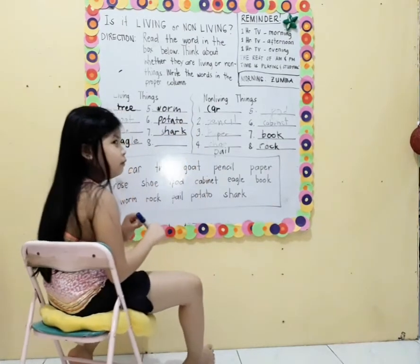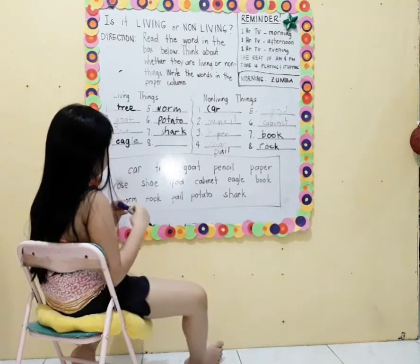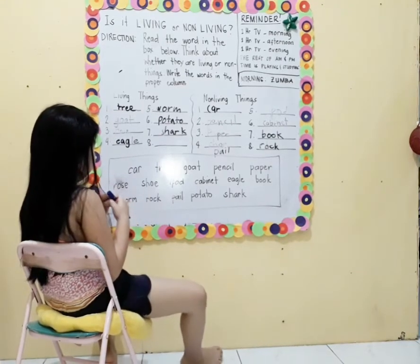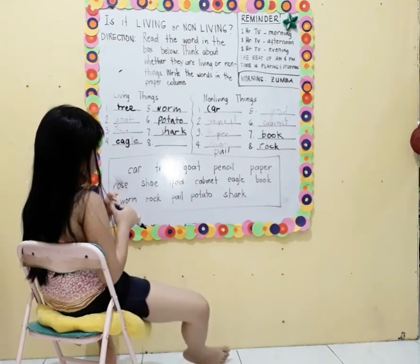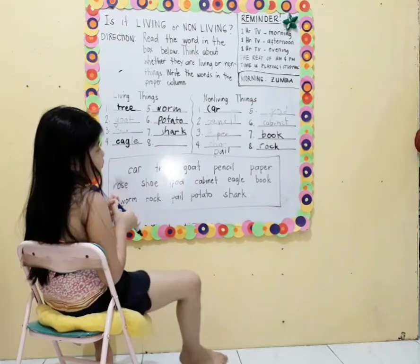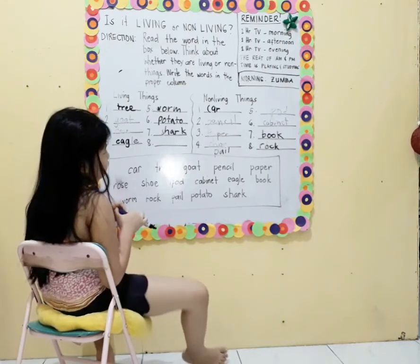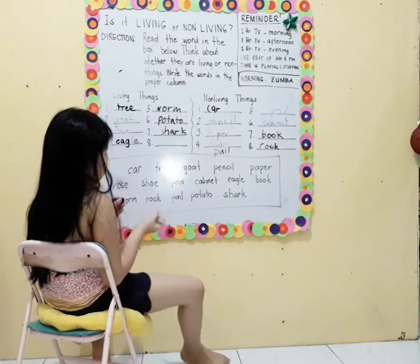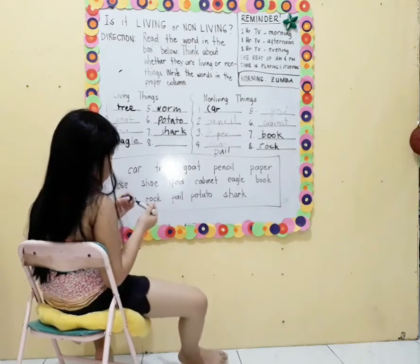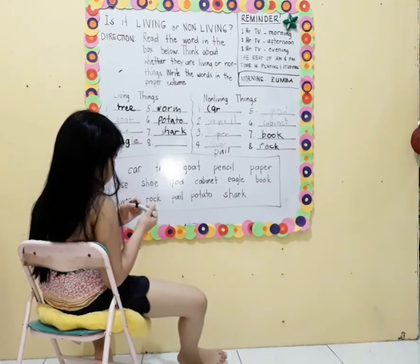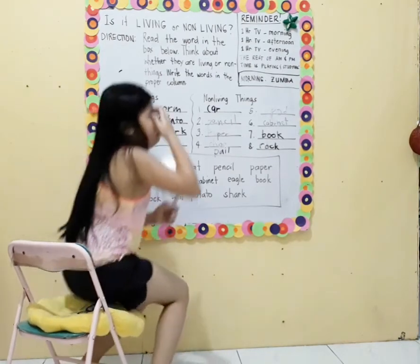Living things: tree, gold, rose, eagle, worm, potato, and shark. Non-living things: car, pencil, paper, shoe, veil, tripod, cabinet, book, and graph. You already know the living things and non-living things.